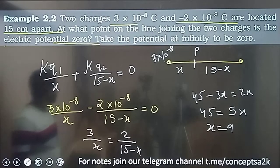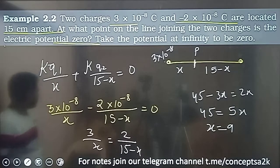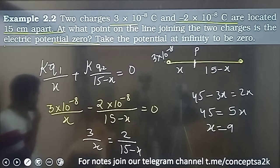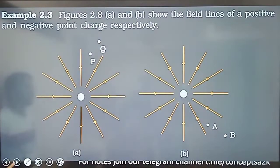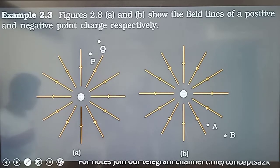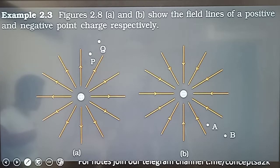There are actually two correct answers — one point inside the line joining the charges and one point outside. The question asks for the point on the line, so you should consider both inside and outside cases depending on the signs of the charges.